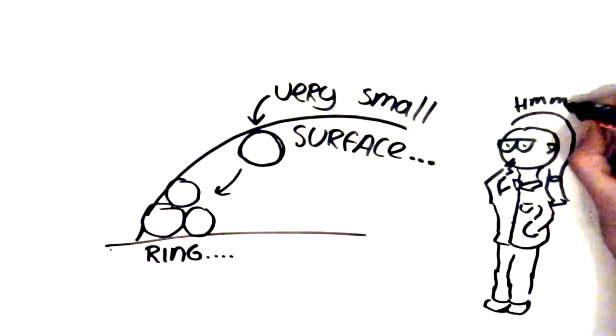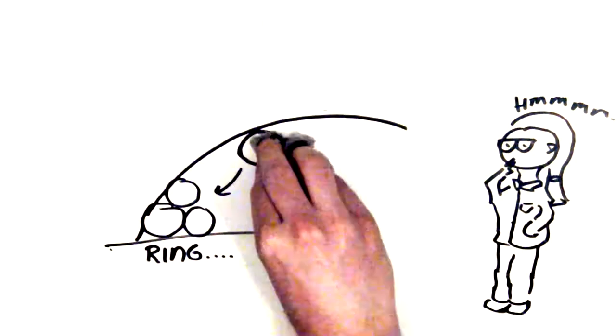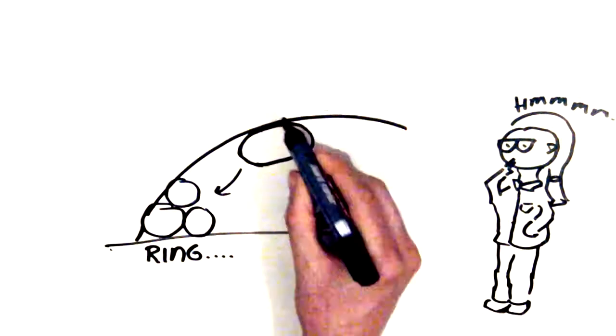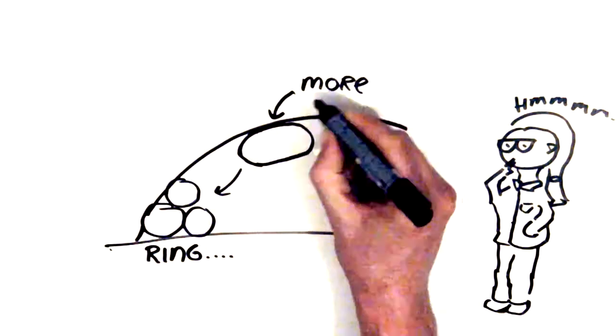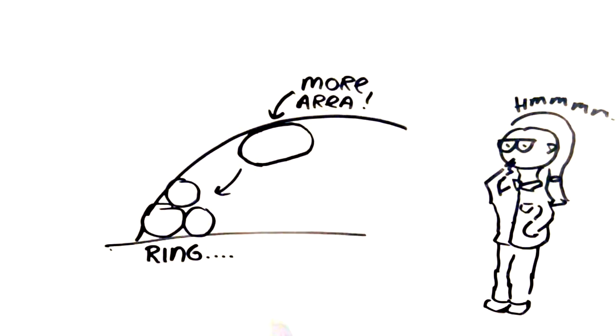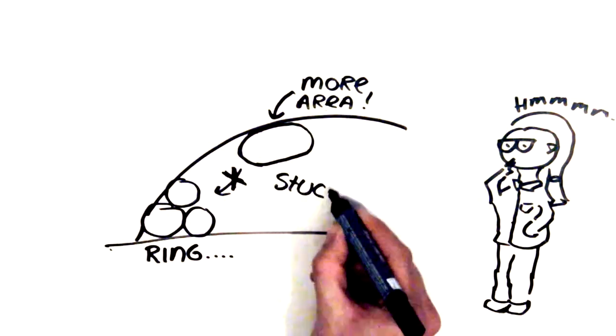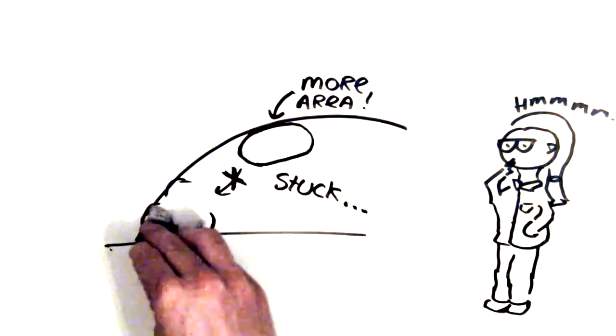Scientists have studied and experimented with other particle shapes and it turns out that even a small change is enough to stop rings from forming. When they use ellipsoids, elongated particles, the particles spread out evenly. These particles stick to the water-to-air surface and they don't get pulled towards the edge.